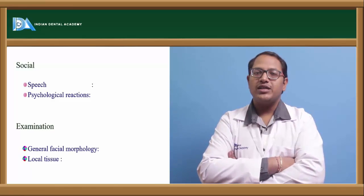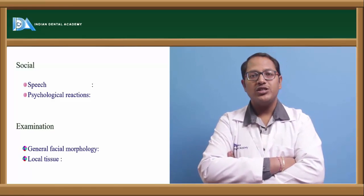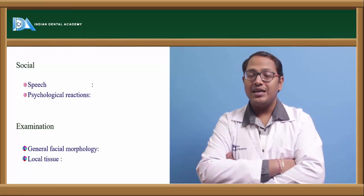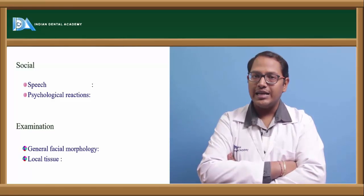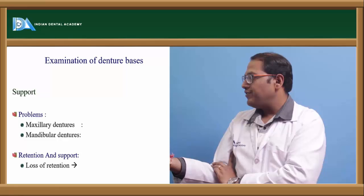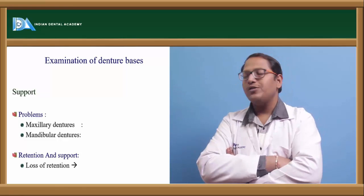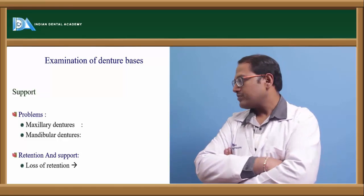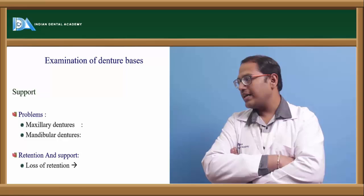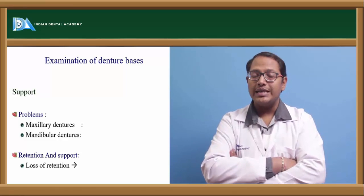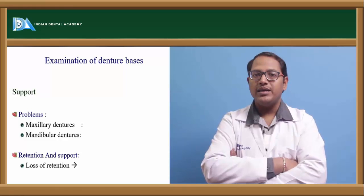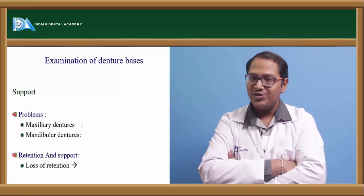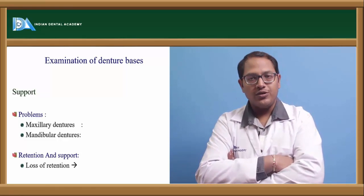Psychological responses to the denture should be noted — is there any problem speaking specific words, any doubling of words? For example, is there a problem with the 'S' sound? General facial morphology is also important — if wrinkles are still present, that means the vertical dimension recorded is wrong. Local tissues should be checked to see if they are being abused by the denture, indicating deficiencies in the intaglio surface. Candida albicans colonization in the denture indicates poor oral hygiene.